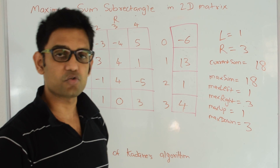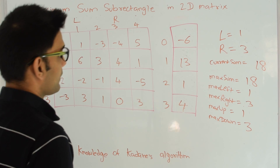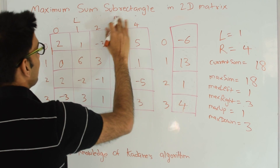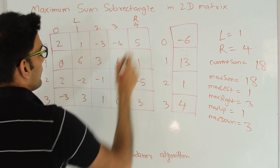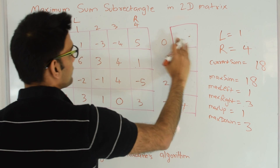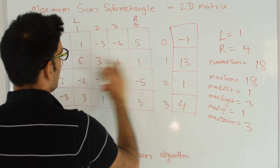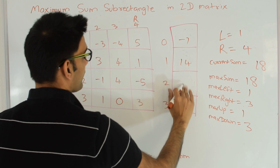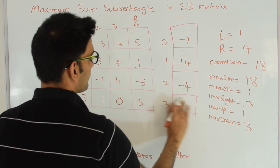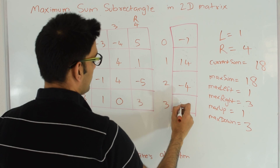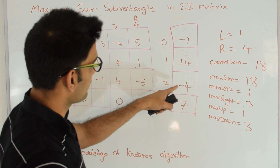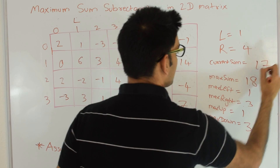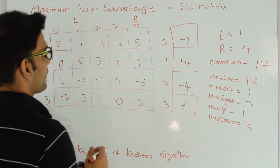This is our new max rectangle. We increment right to 4. We add column 4: -6+5=-1, 13+1=14, 1+(-5)=-4, 4+3=7. The maximum sum sub-array: 14-4=10, 10+7=17. Current sum is 17, which is not greater than 18, so we do nothing.